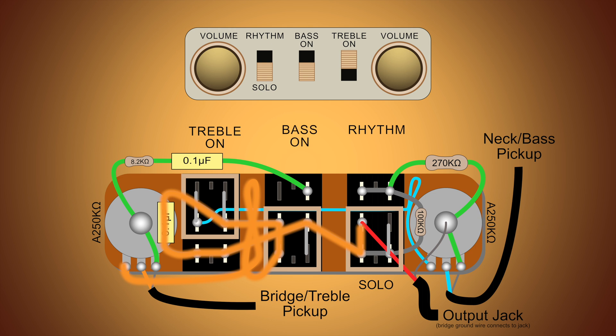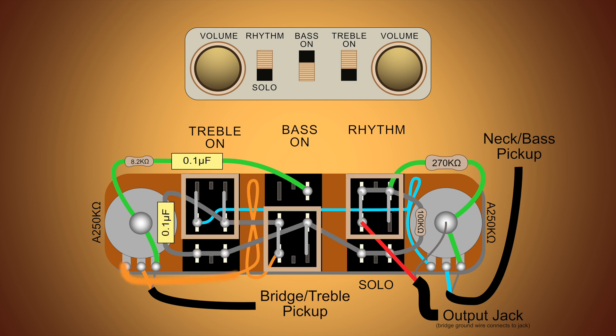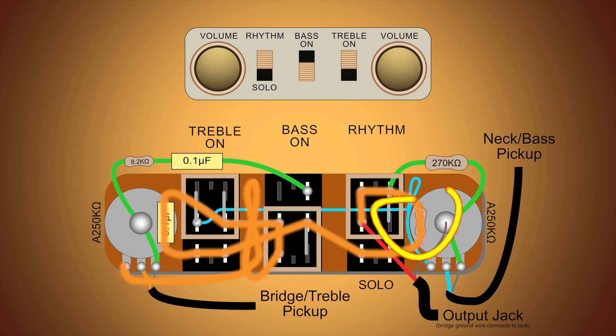And finally, for the bridge pickup, let's take a look at turning the rhythm switch on. You can see that the signal took a path through one of the resistors, in effect dampening the volume and also removing some of the bass.